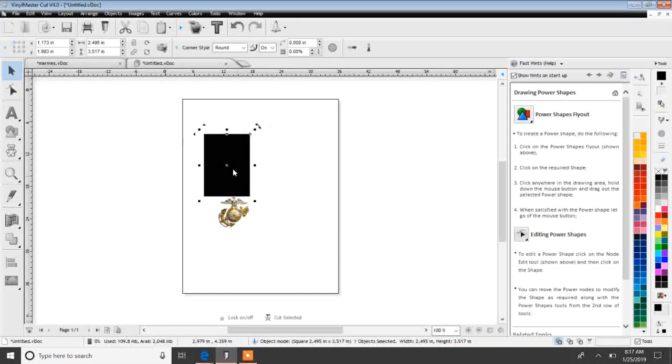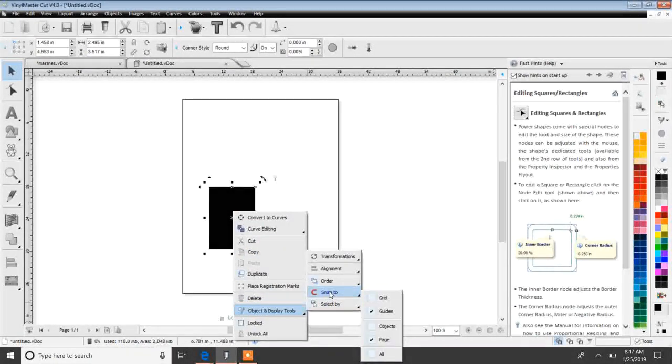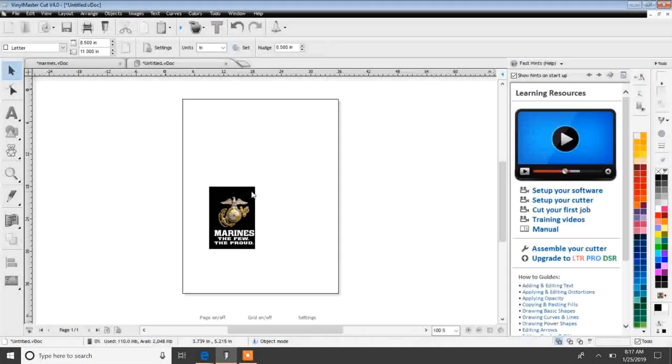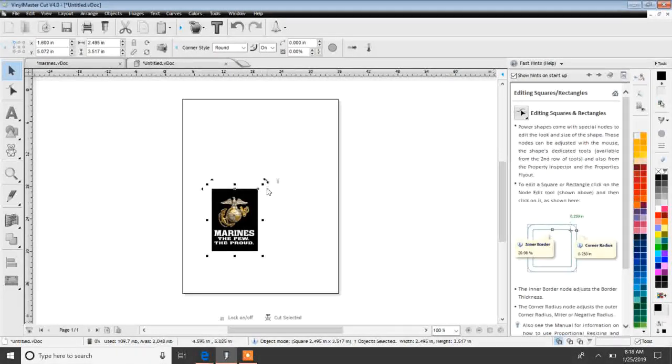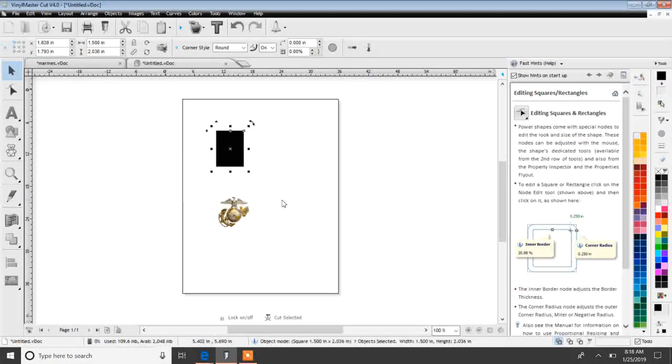I do got to change this Marines to white text because my background is going to be black. So we're just going to make a black square, put that there, then we're going to send it to the back. Clicking on my black square, I know I need it 2.035, about just over two inches. That's supposed to be my height.